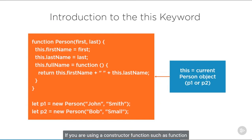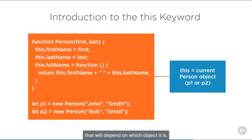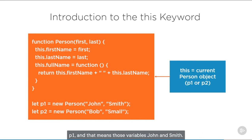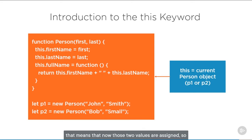If you're using a constructor function such as 'function Person', when you use 'this' inside of it, that will depend on which object it is. For example, 'let p1 = new Person' with John and Smith assigned as first name and last name — calling fullName on p1 means 'this' refers to p1. Similarly, 'let p2 = new Person' with Bob and Small means 'this' is now in the context of p2.